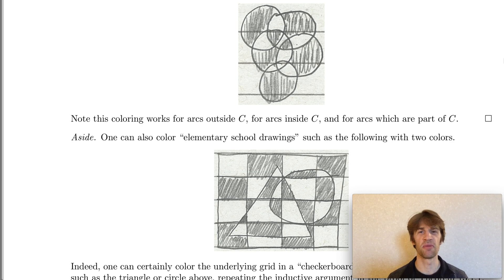We've assumed that we can color regions formed by n minus one circles, and we've used that to prove that we can color the regions formed by n circles using only two colors. And therefore by induction the theorem is true for all n, all numbers of circles.